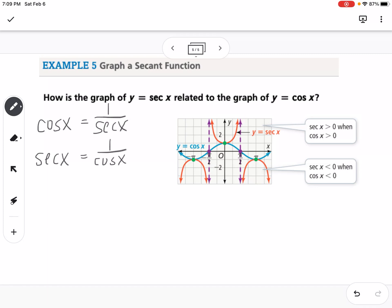So from our graph here, you can see the blue graph is cosine. Secant is going to have asymptotes because we have a fraction. So it's going to have asymptotes wherever cosine is equal to 0. So cosine equals 0 at negative pi over 2 and positive pi over 2, so that's why you see those purple asymptotes right there.